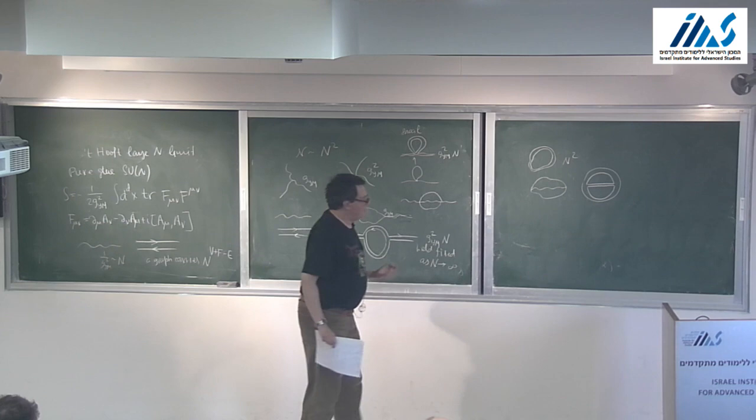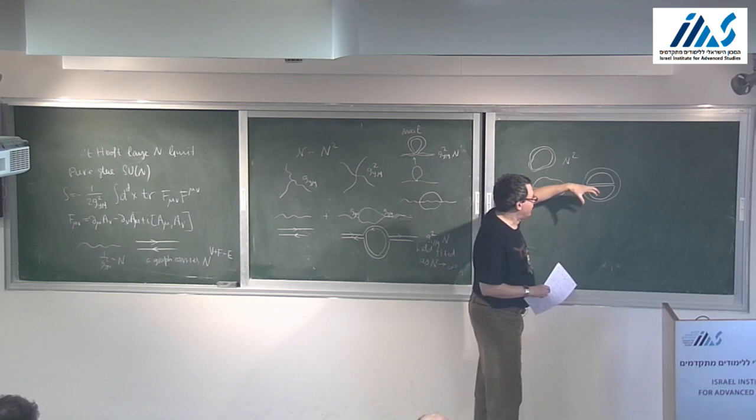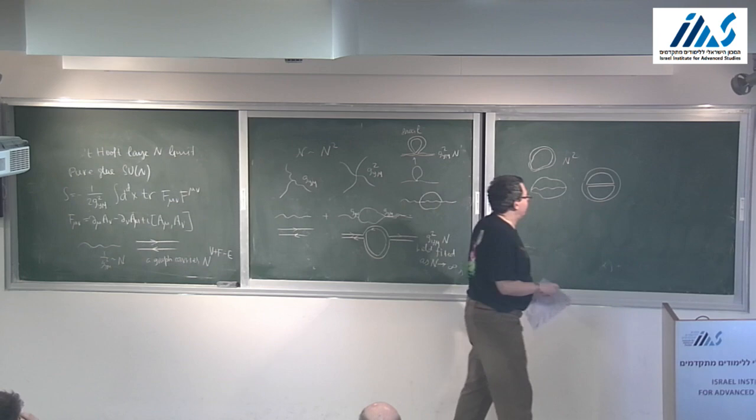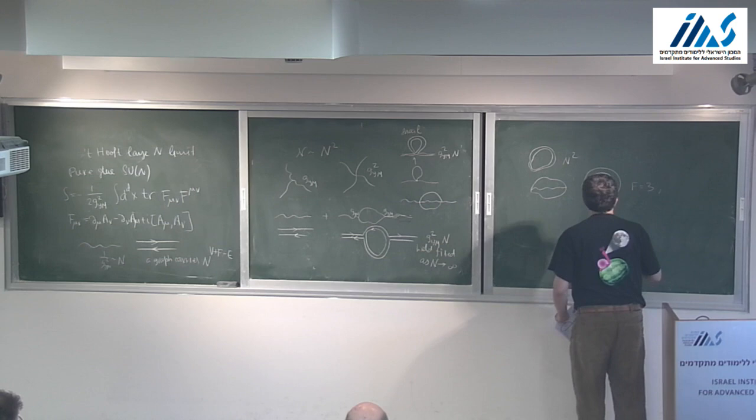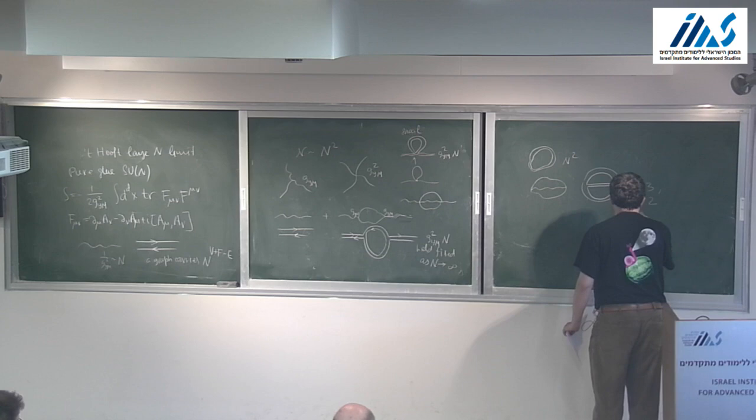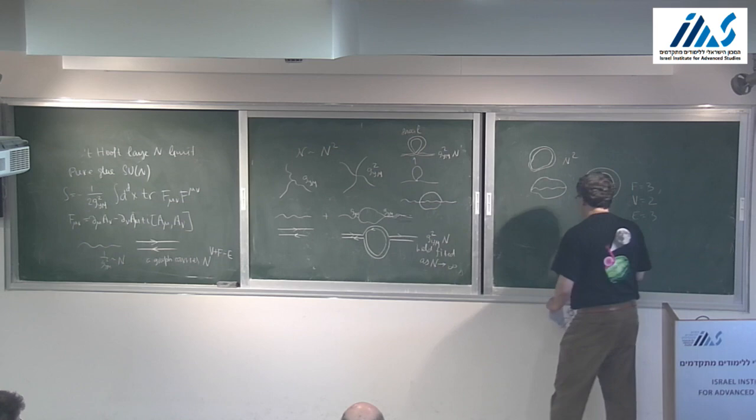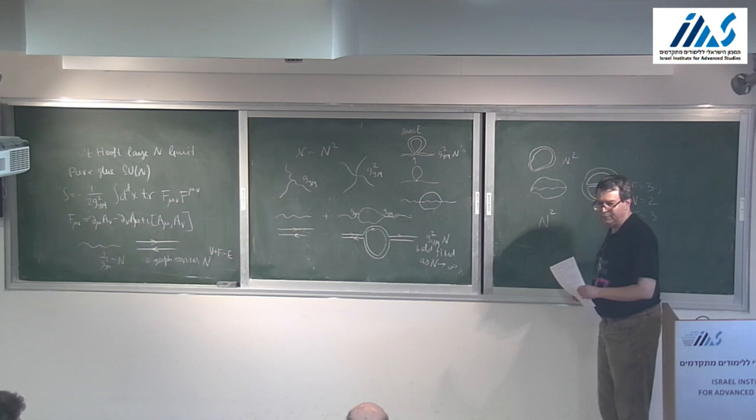An index loop corresponds to a face. When counting vacuum diagrams, you also count the outer loop because you think of the diagram as drawn on a sphere, and the back face counts too. For example, a specific diagram has F=3 faces, V=2 vertices, and E=3 edges, giving N^(2+3−3) = N².